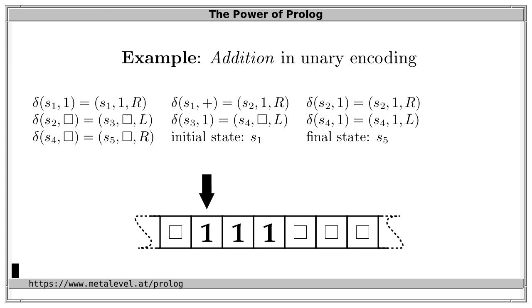The important point is that we can write Turing machines for all computations that are known — computing multiplication, factorials, sorting integers, determining primality, and so on. A mechanism is called Turing complete if it can also achieve this generality, or more precisely, also express the workings of a Turing machine. And this is the case for Horn clauses — Horn clauses are Turing complete.